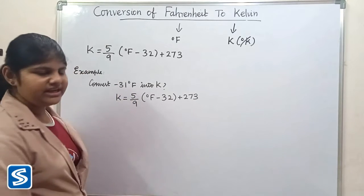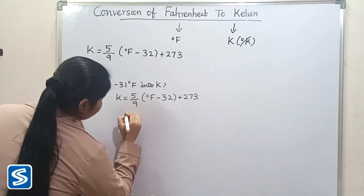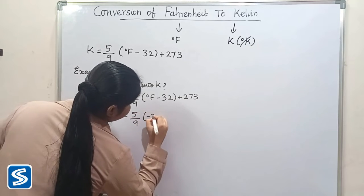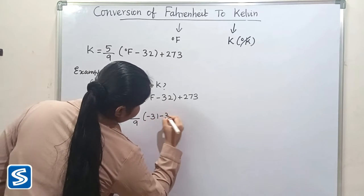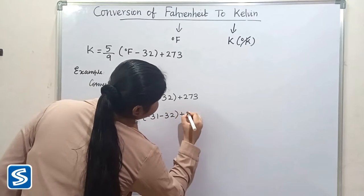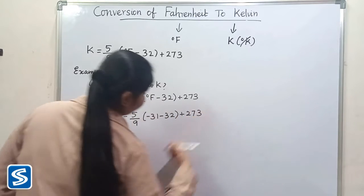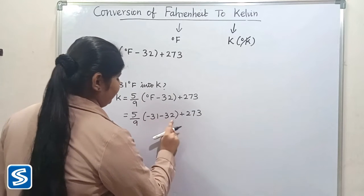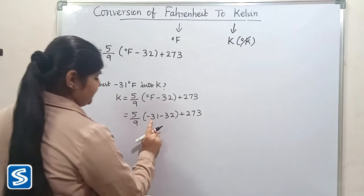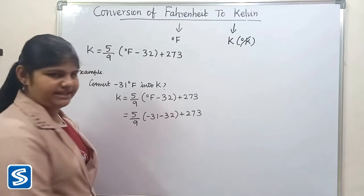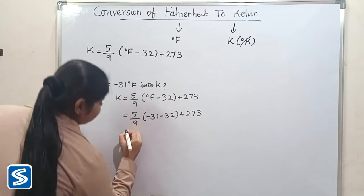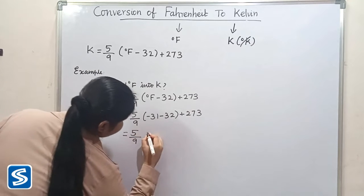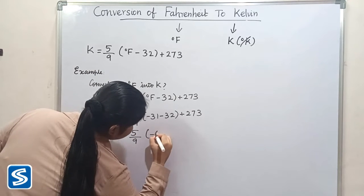We substitute minus 31 in the place of degree Fahrenheit: (5/9) × (−31 − 32) + 273. Simplifying the brackets: minus 31 minus 32 equals minus 63. So Kelvin = (5/9) × (−63) + 273.